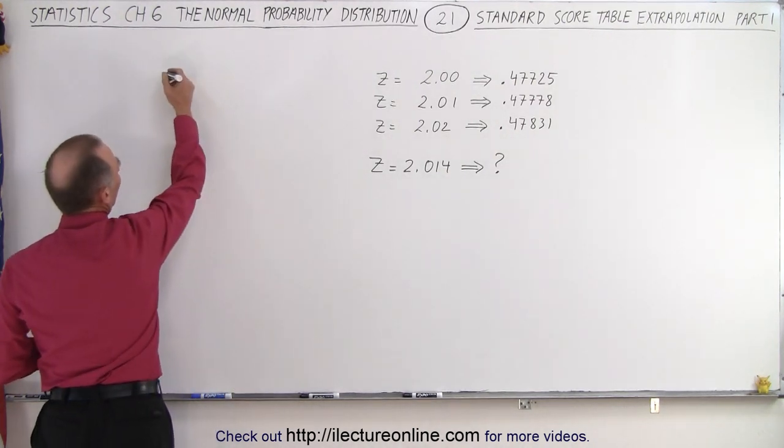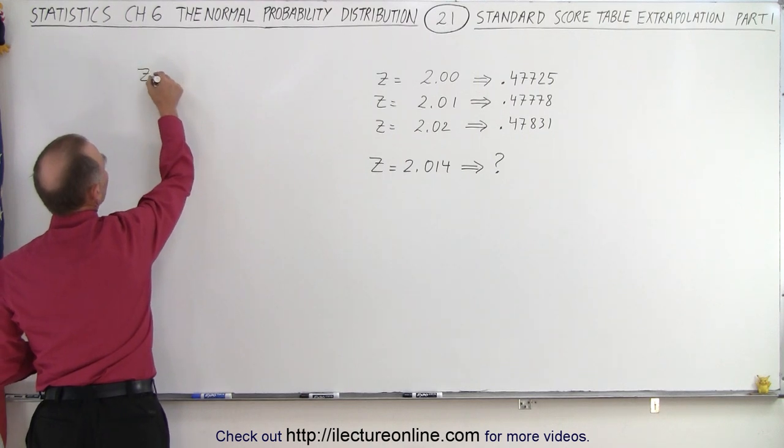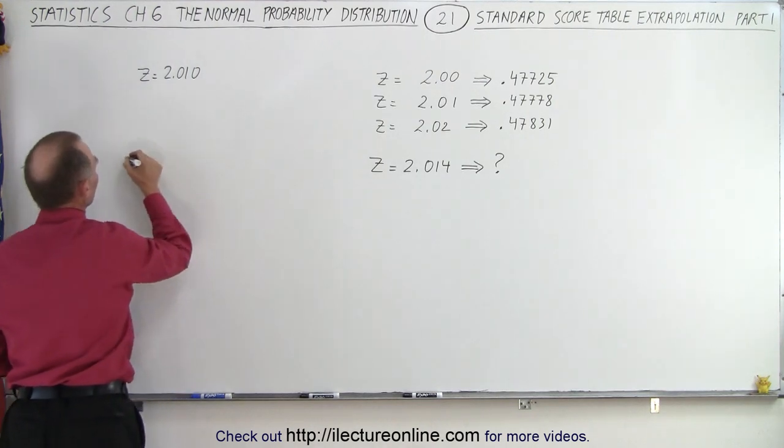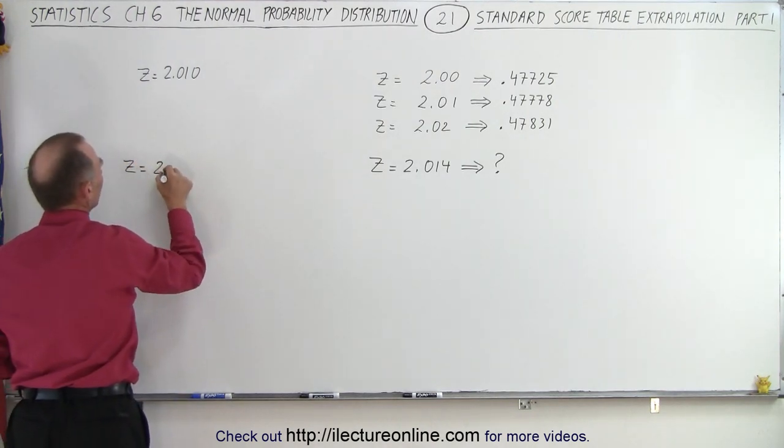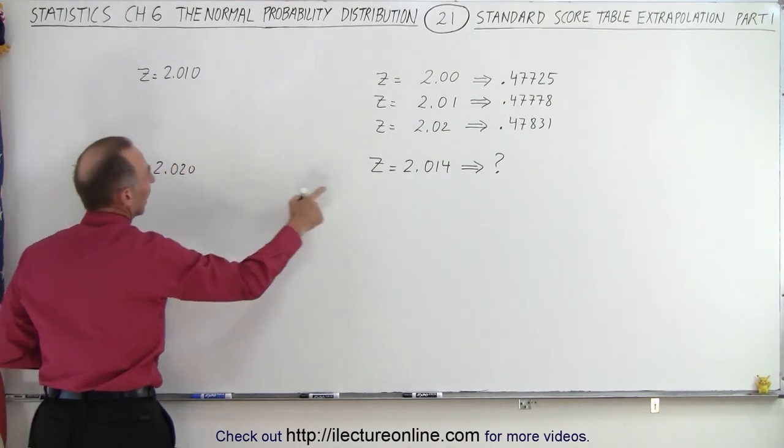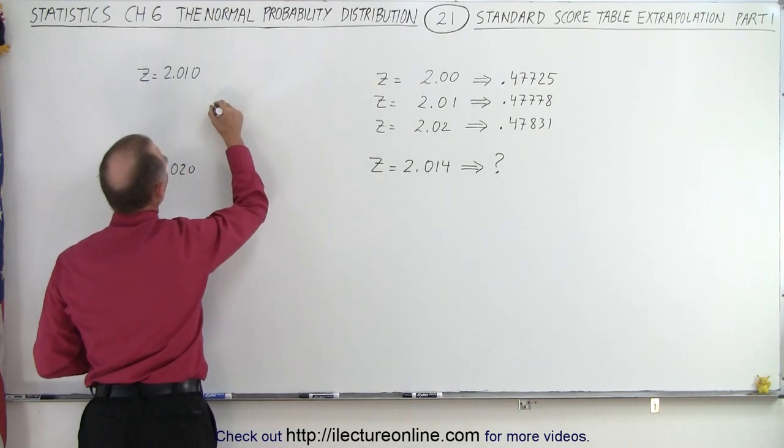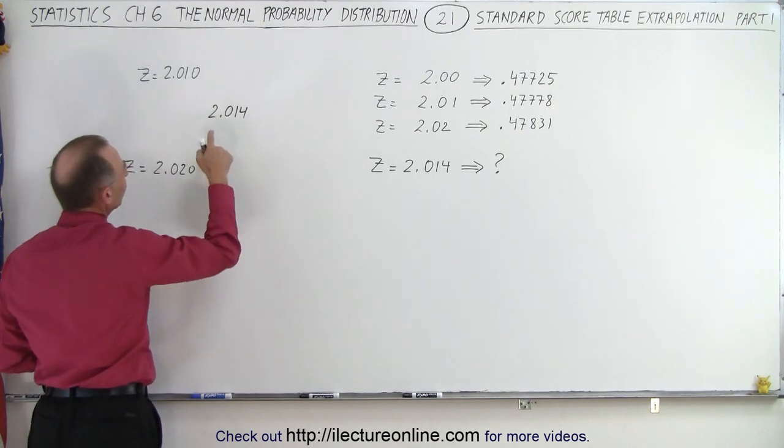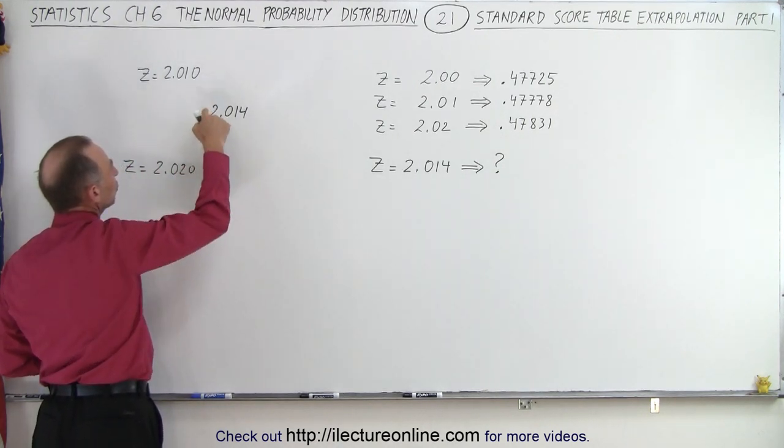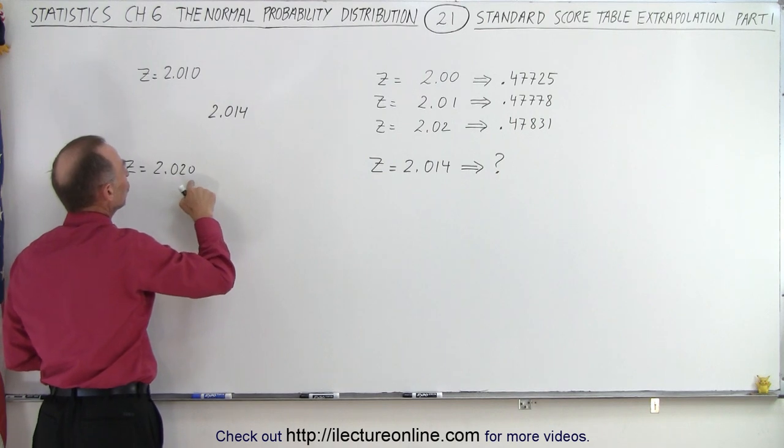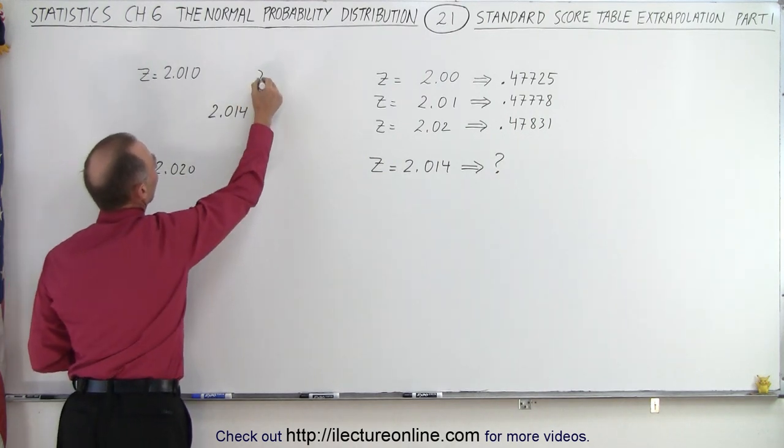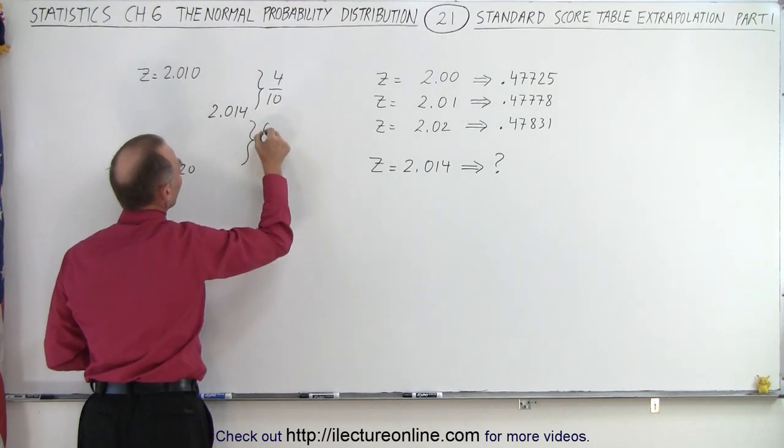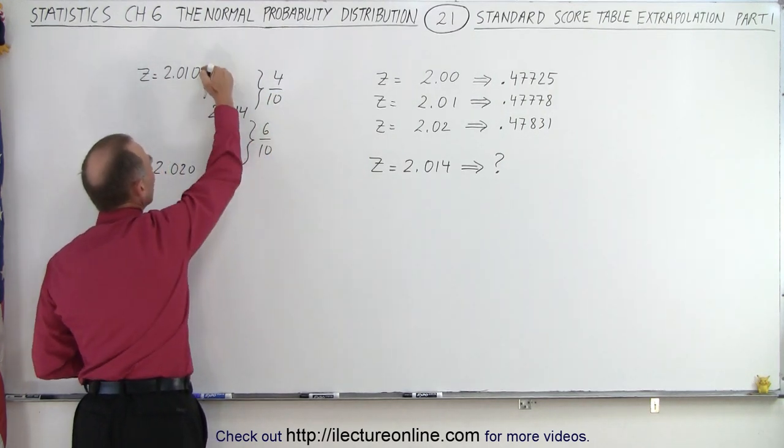So let's say we can rewrite this one as Z equals 2.010 and the next one here, this is Z equals 2.020. And then this value falls somewhere in between at 2.014. Notice that from 0.010 to 0.014 to 0.020 that this distance here represents about 4 tenths and this distance here represents 6 tenths of distance from here to here.